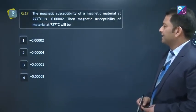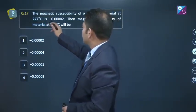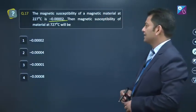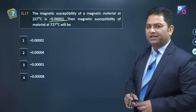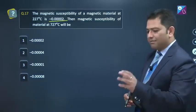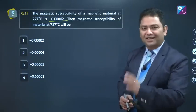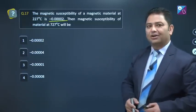Question number 17. Magnetic susceptibility of magnetic material at this temperature is negative, meaning it is diamagnetic substance. We are asked about susceptibility at 727 degree centigrade. You know, diamagnetic substance susceptibility doesn't change with temperature. So clearly, the same value will be there, option number 1.